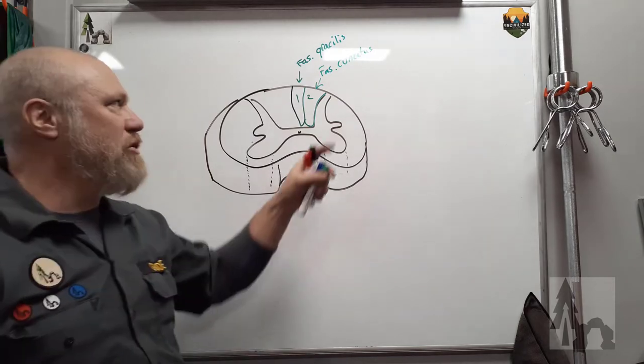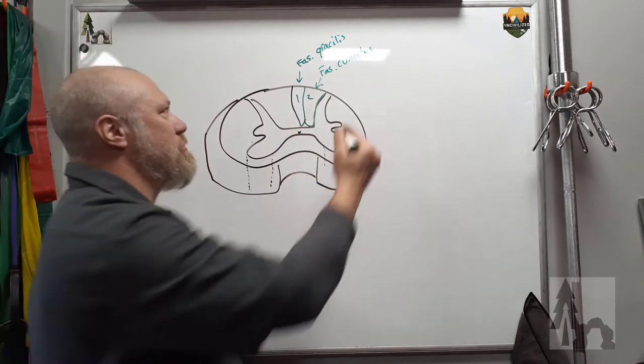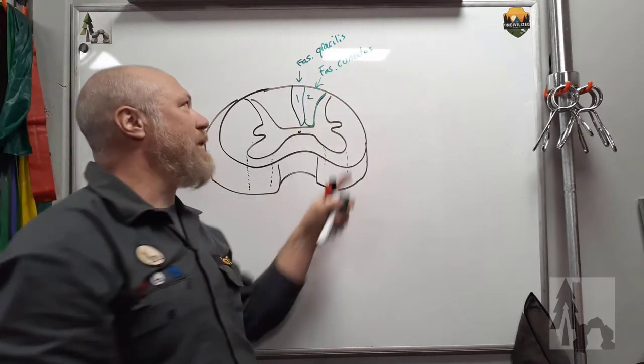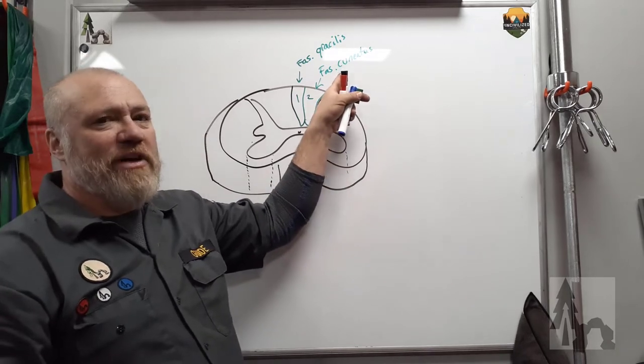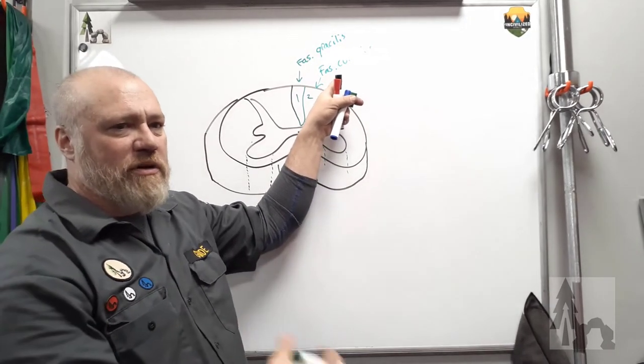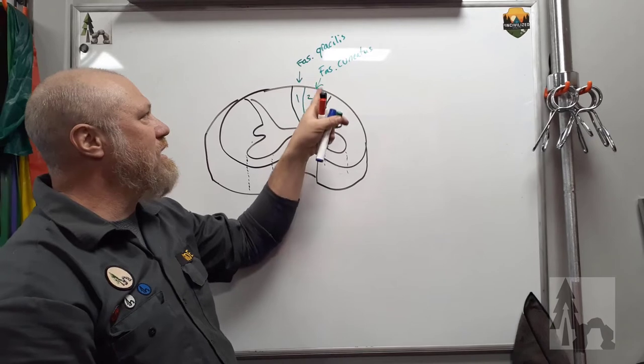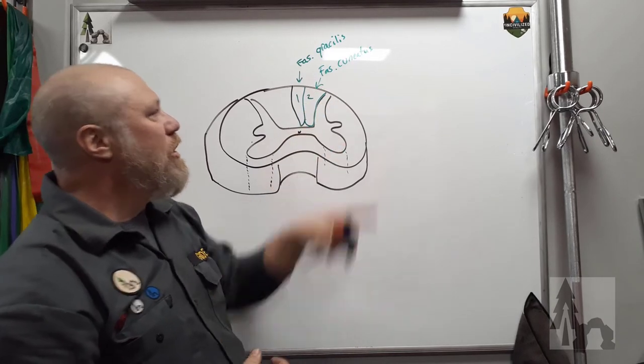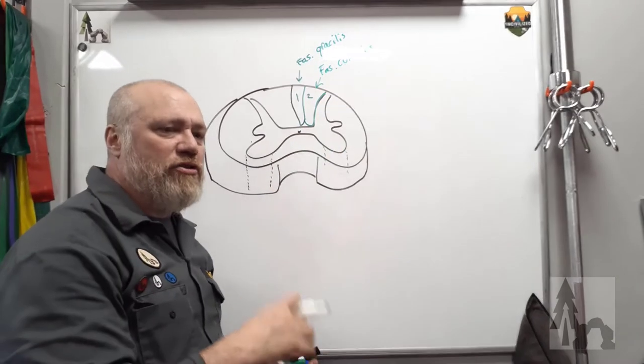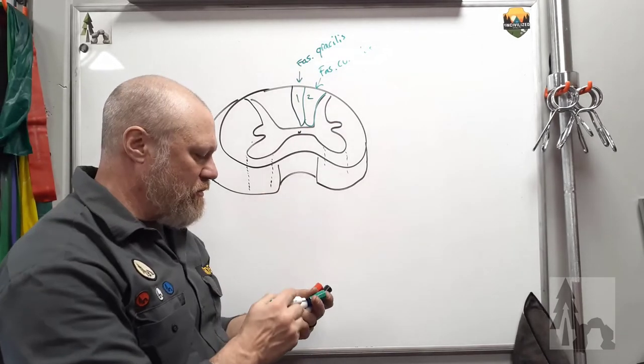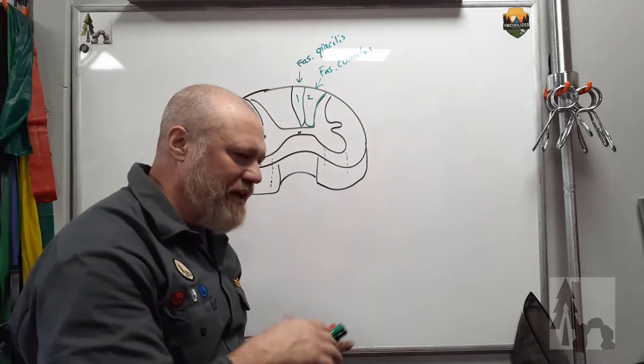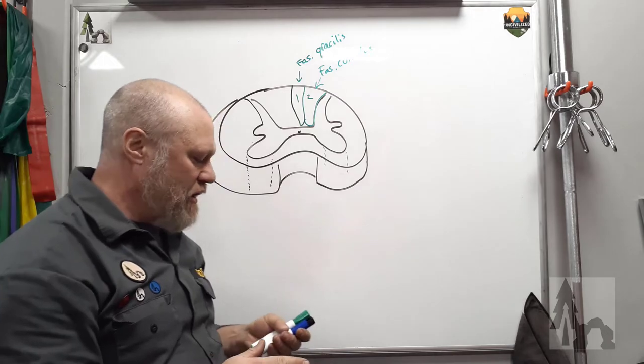Cuneatus because it's kind of wedge-shaped like the cuneiform writing of ancient Sumerians. At least, I think that's why it's named that. This is going to carry information—vibration, touch, discriminatory touch pressure up to your brain from the upper limbs and such. We'll get into the long tracts ascending and descending and their pathways through the spine, their levels of decussation and such in another video.